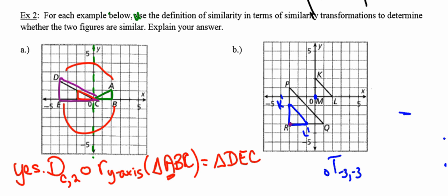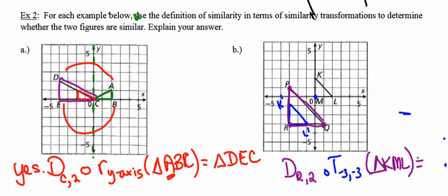Now I need to find the dilation. If I dilate using R as the center, R stays put. K prime will go twice as far from point R and map onto point P. L prime will be twice as far from R and map onto point Q. So: a dilation with a center of R and a scale factor of two, following a translation of negative three units in the x direction and negative three units in the y direction of triangle KML, will produce triangle PRQ. I have to be careful naming the vertices: K pairs with P, L matches with Q, and M maps to point R.